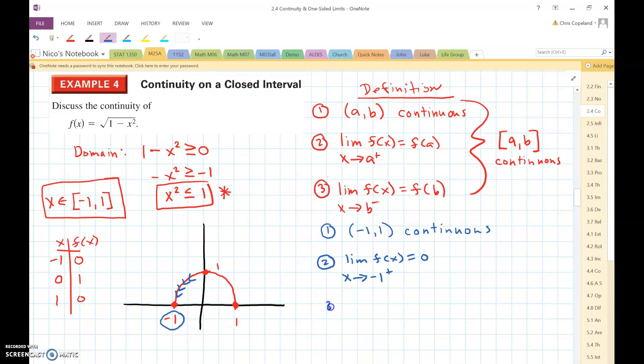And also, I need to take the limit of f of x as x is approaching one coming from the left. And we need to look at it this way. This also would be zero. Because it meets these conditions, I can say that this function is continuous from negative one to one.